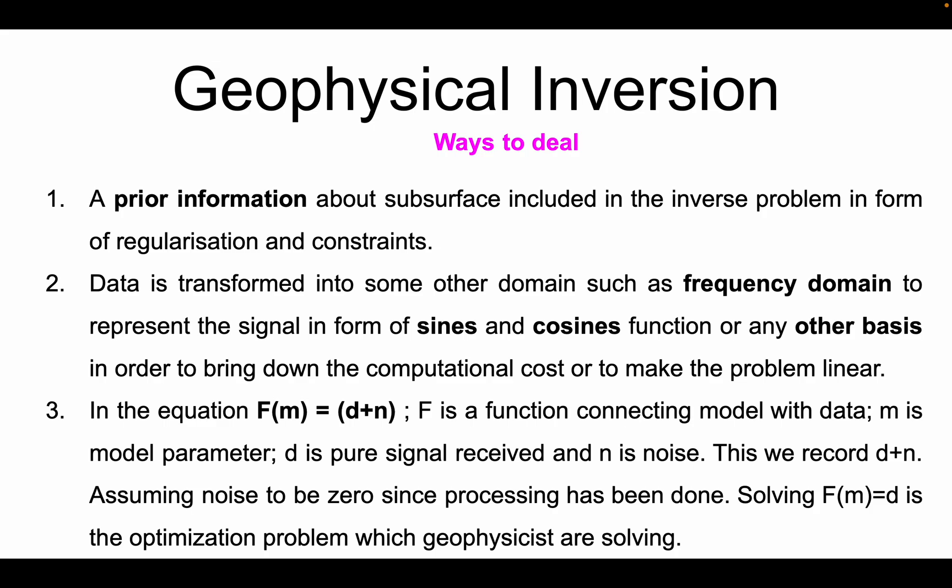In many cases the data can be transformed into some other domain so that the problem becomes simpler. In some cases the subsurface property can also be transformed into another domain so that the computational cost is brought down. For example, when we do FWI, we do forward modeling of waves — it can be done in the time domain as well as the frequency domain. Many times people go for frequency domain forward modeling because it is cheaper and faster with respect to computational aspects.